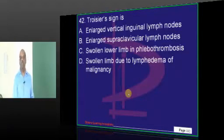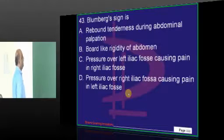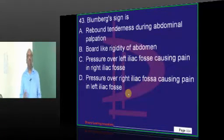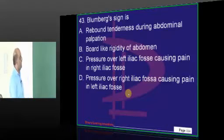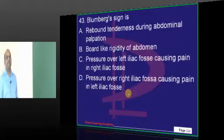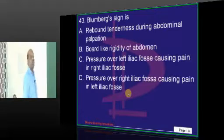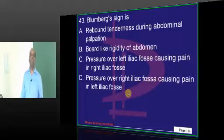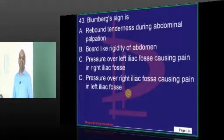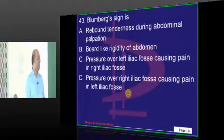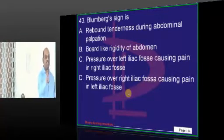Virchow's node is the left supraclavicular lymphadenopathy. Classically, what is Blumberg's sign? If you know it, you will answer by now. If you are still reading all the options, you are out of the game.